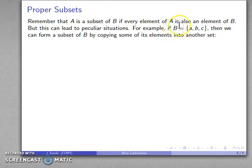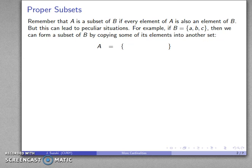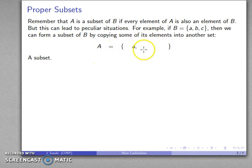Let's take set B consisting of these elements. I can form a subset by taking some of them and copying them into another set. So I'll take my set A and copy some elements — if my set A consists just of that, then A is a subset because everything in A is in set B.